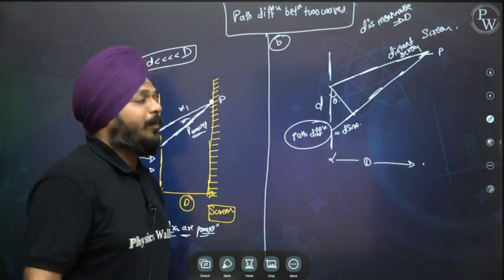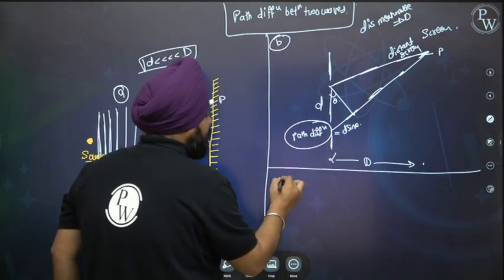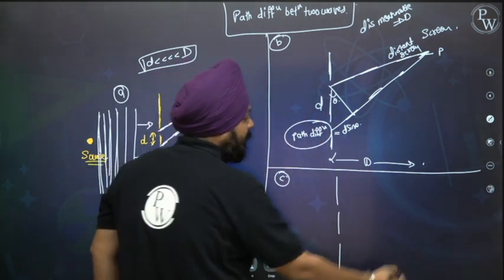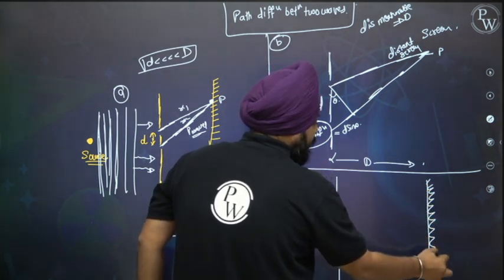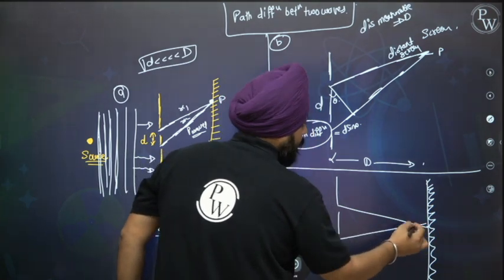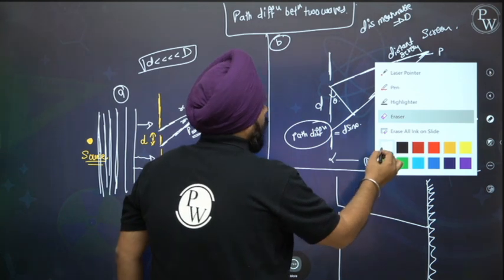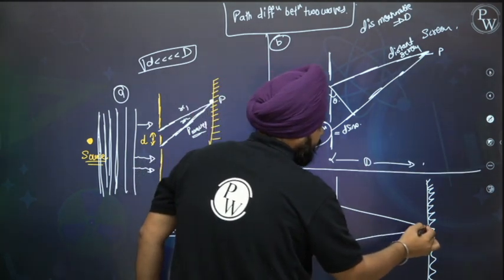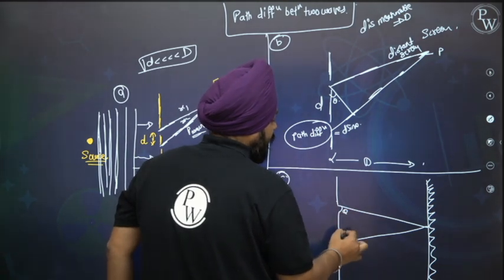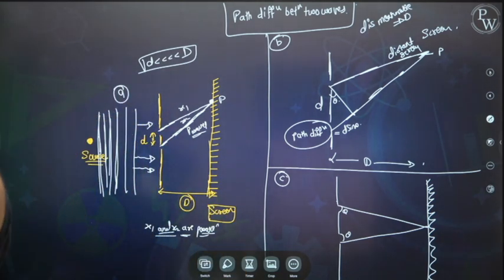The third arrangement: d is also appropriate and comparable. Again, with angle theta on both sides, an interference pattern is obtained. So there are three possibilities in the YDSE arrangement.